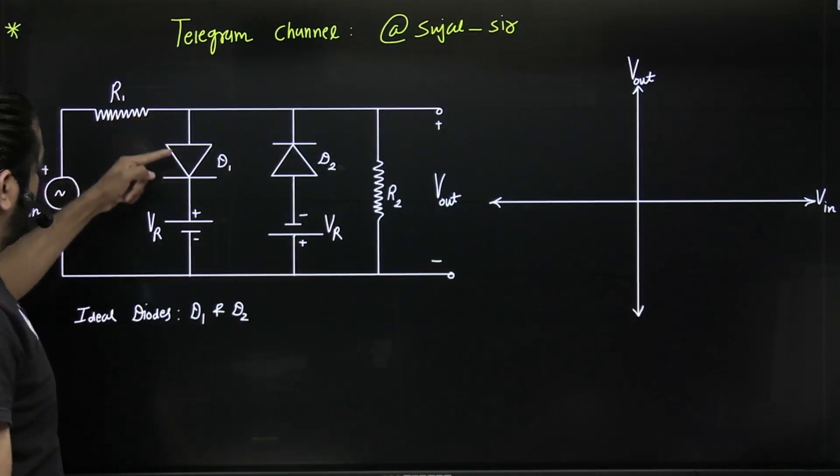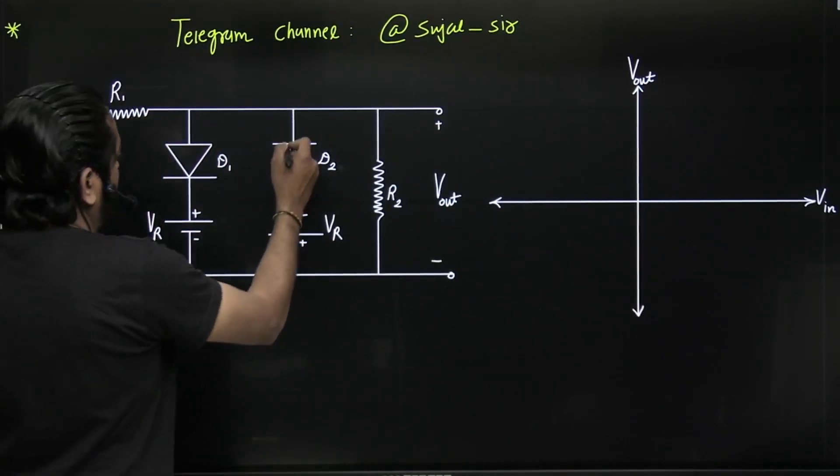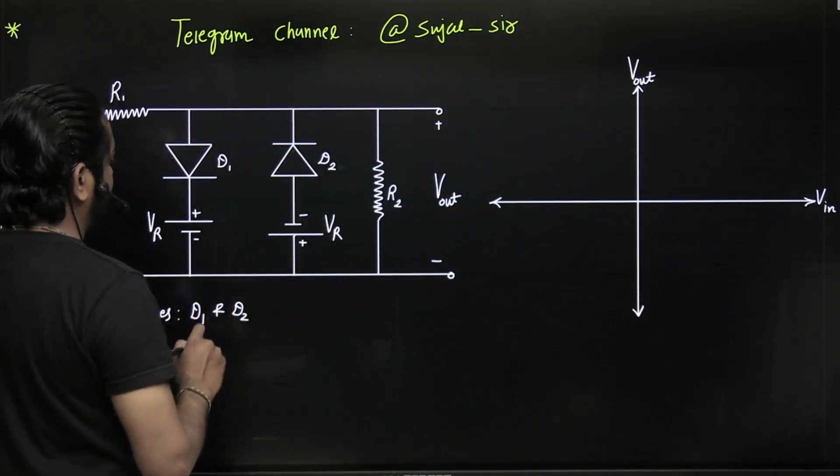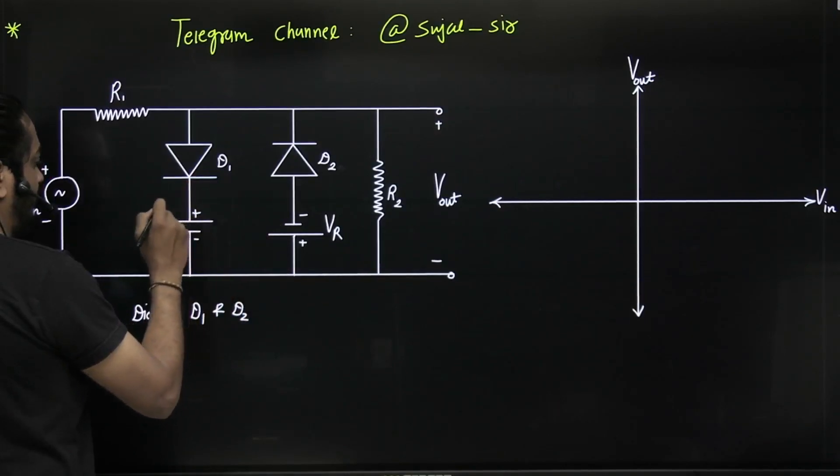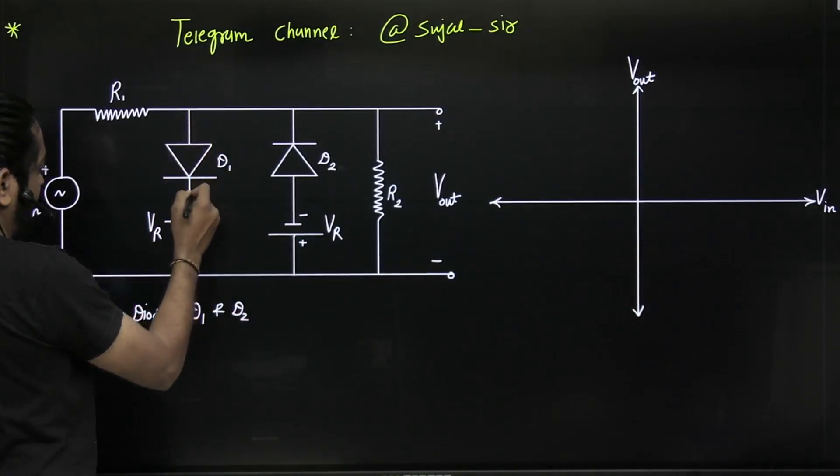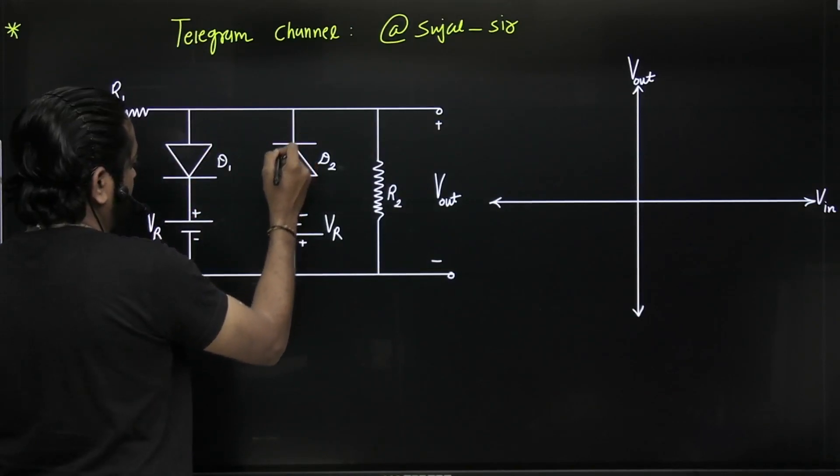Downward direction: higher value battery. Upper direction: lower value battery. Both batteries can be positive, both can be negative, or one positive and one negative. Make sure downward direction is higher value, upper direction is lower value.